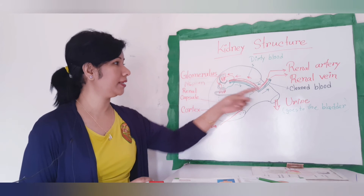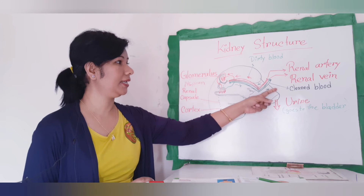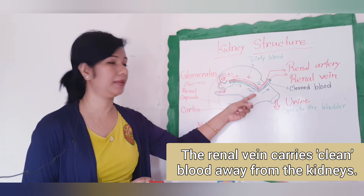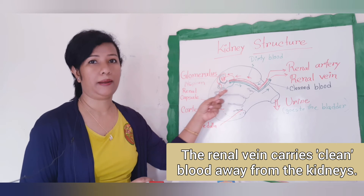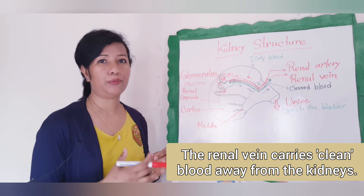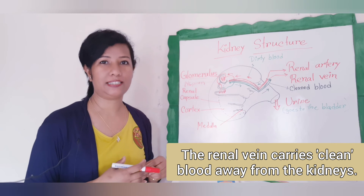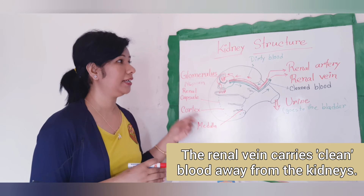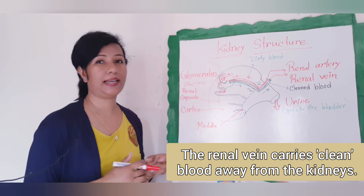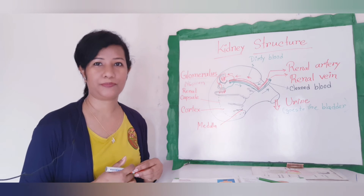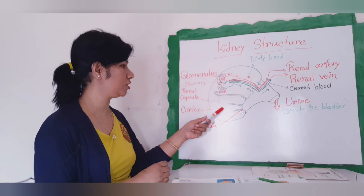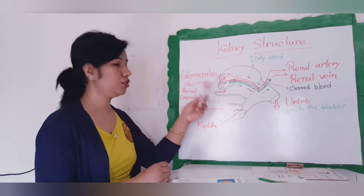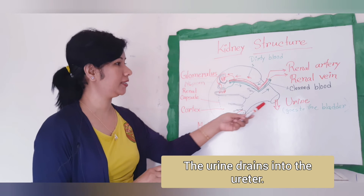The renal artery carries dirty blood to the kidney, while the renal vein carries clean blood away from the kidney. That is the difference between the renal artery and the renal vein. The kidney also has a cortex and a medulla — you need to draw and label these on your diagram.